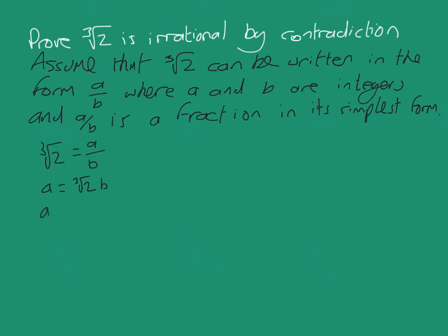Let's do that. a cubed equals, well, the cube root of 2 cubed is 2, two lots of b cubed. Well, what does that tell me? It tells me a cubed is even. If a cubed is even, well, it must be even, because it's 2 times b cubed. It's 2 times something.